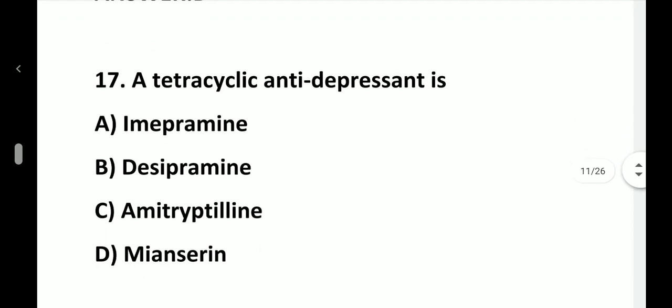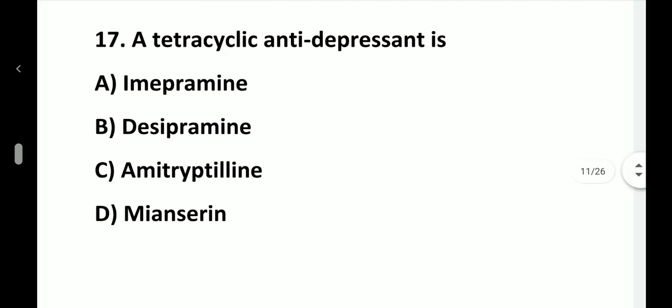Question number 17. A tetracyclic antidepressant is: option A, Imipramine; option B, Desipramine; option C, Amitriptyline; option D, Mianserin. Answer is option D, Mianserin.